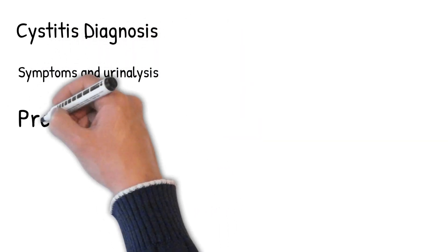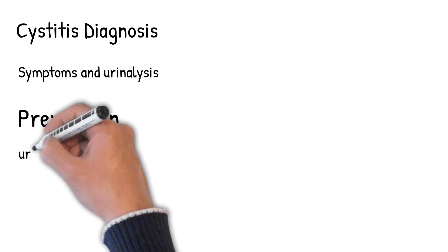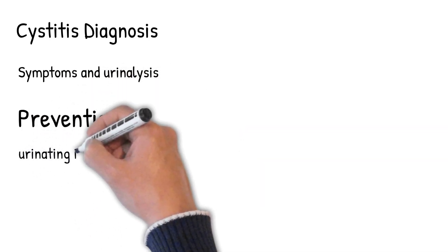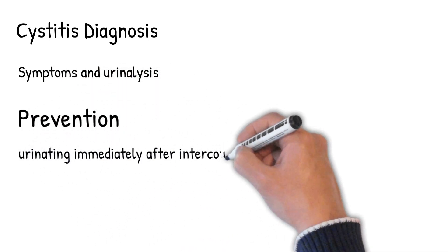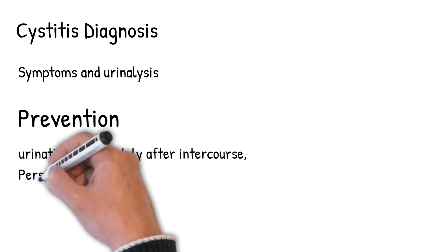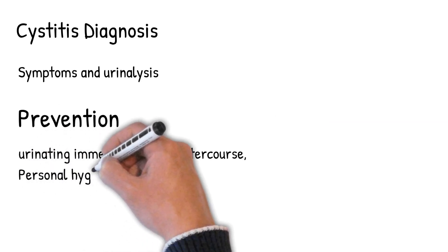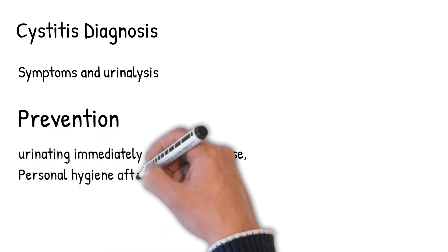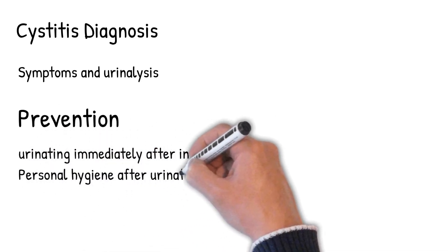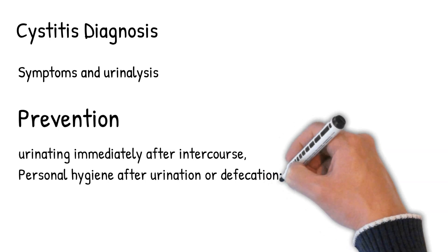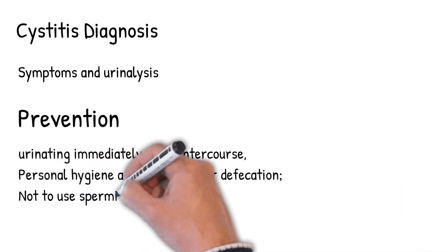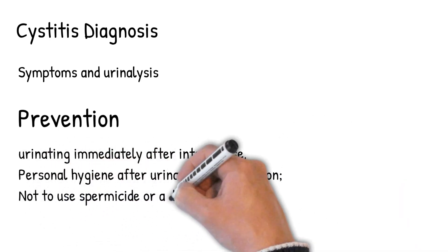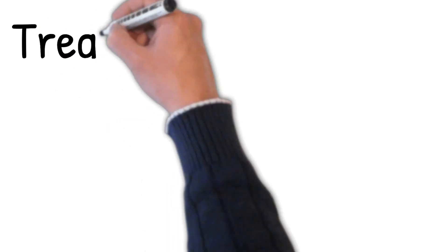Prevention: Urinating immediately after intercourse, by flushing out urethral bacteria that would otherwise ascend into the urinary bladder. Personal hygiene after urination or defecation — bathing or washing. Not to use spermicide or a diaphragm as a method of contraception.